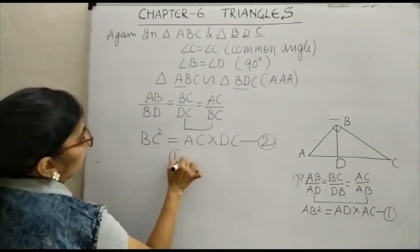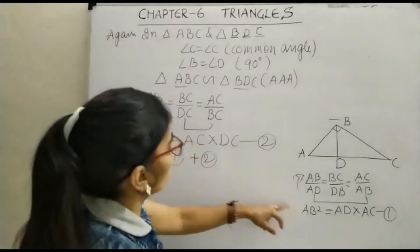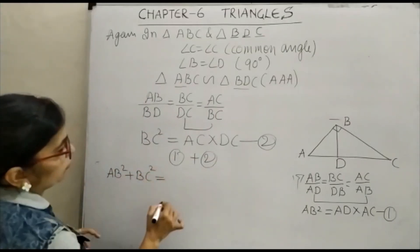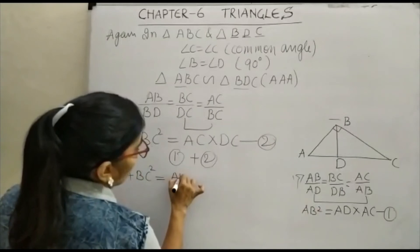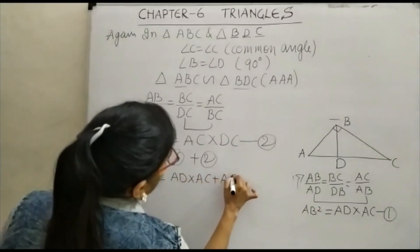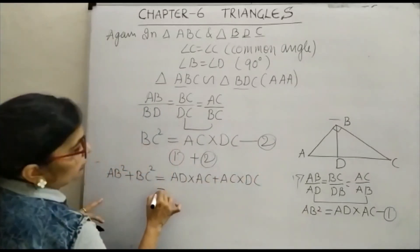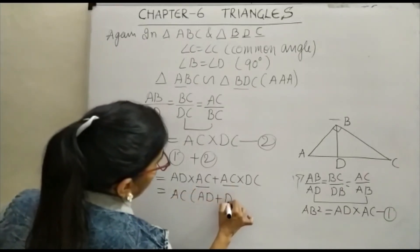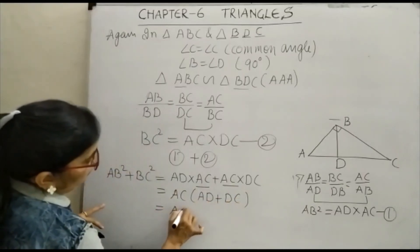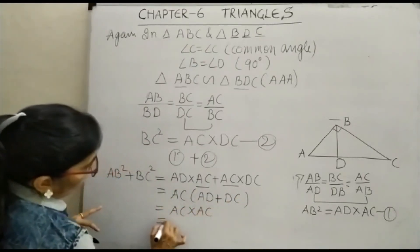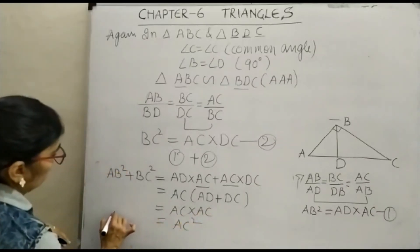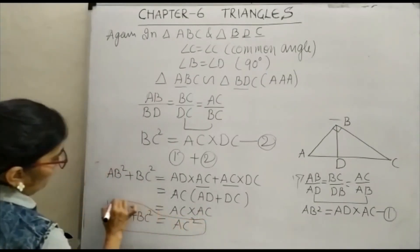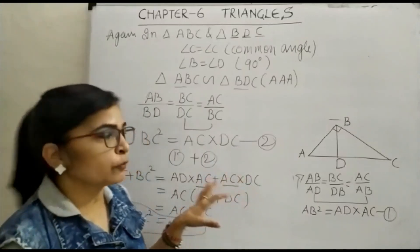Now add equation 1 plus equation 2. AB square plus BC square is equal to AD into AC plus AC into DC. This is what we were supposed to prove: in a right angle triangle, the square of the hypotenuse AC square is equal to the sum of the squares of the other two sides AB square plus BC square.